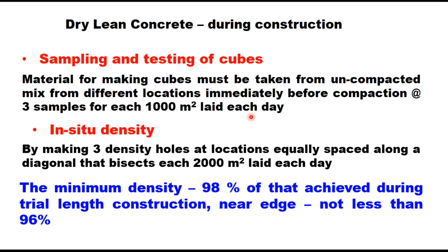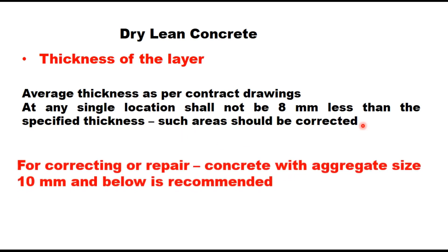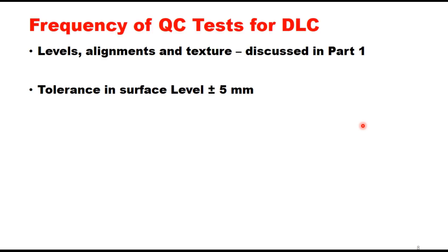Near edges, this density should not be less than 96% of the reference density, which is the density achieved during the trial length section. The average thickness of the layer should be as per contract drawing, but at any single location it should not be less than 8 mm below the specified thickness. Wherever the thickness is less by more than 8 mm than the specified thickness, such areas should be corrected, and the repair can be done with concrete having aggregate size of 10 mm and below. This covers the frequency of quality control tests for DLC.